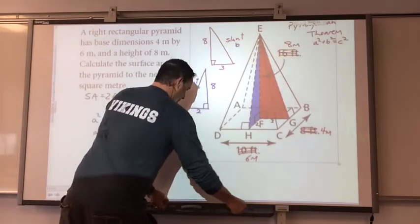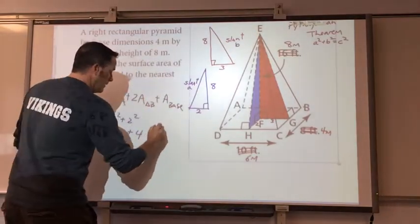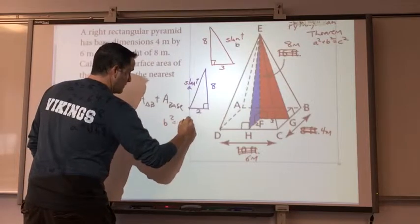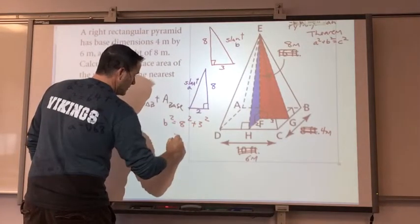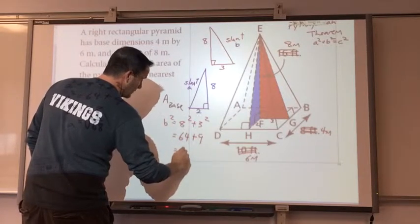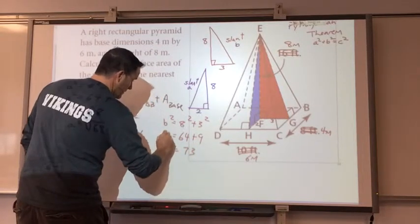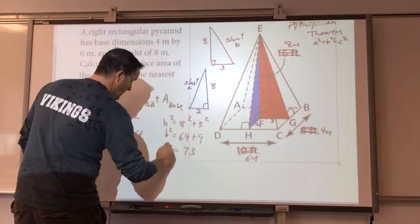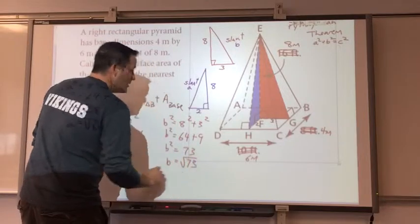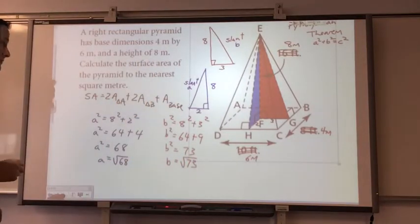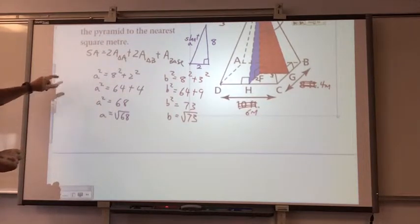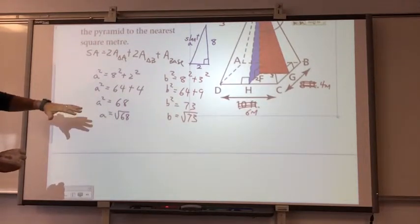The other triangle, B squared, is going to be equal to 8 squared plus 3 squared, which equals 64 plus 9 equals 73. So, that's B squared, B squared, B equals the square root 73. So, those are our heights, or slant heights, sorry. Now, we have all the information to start doing our work.